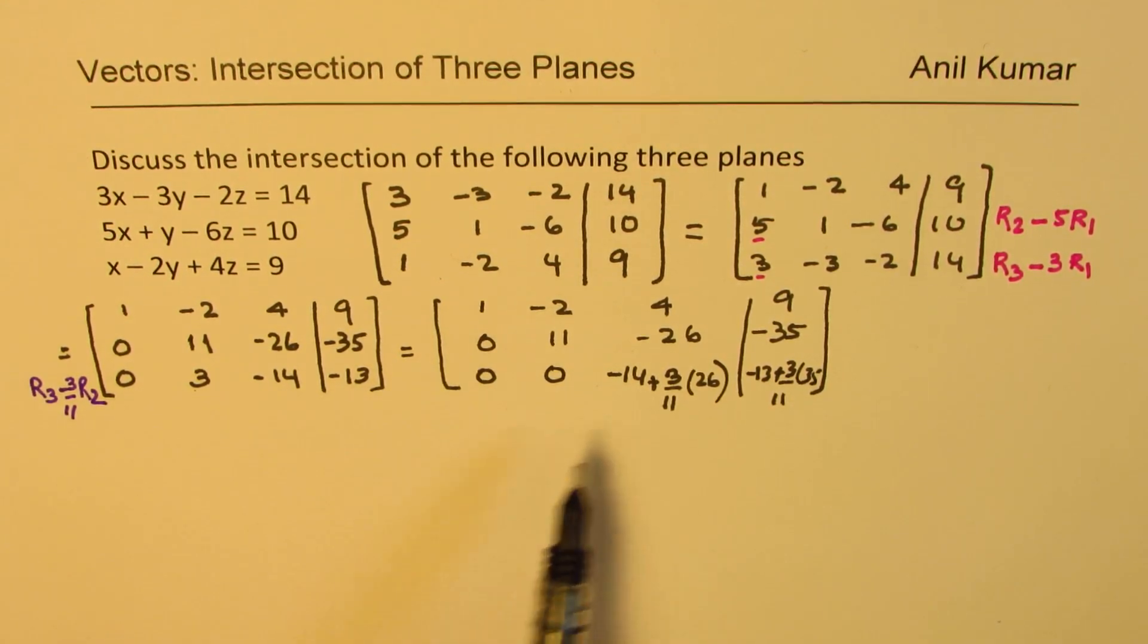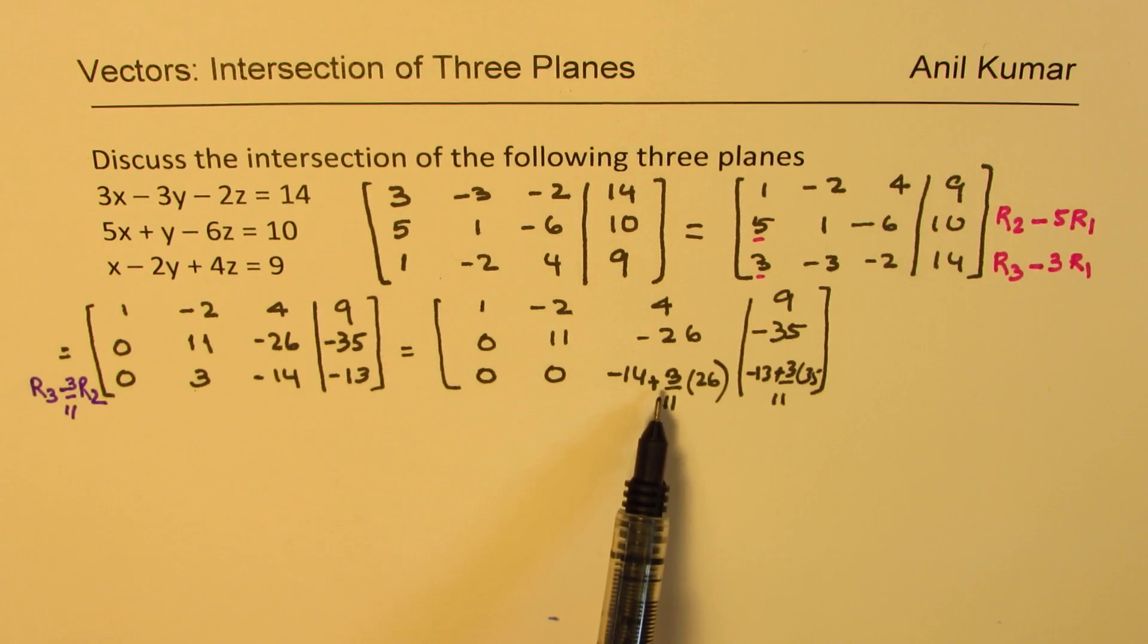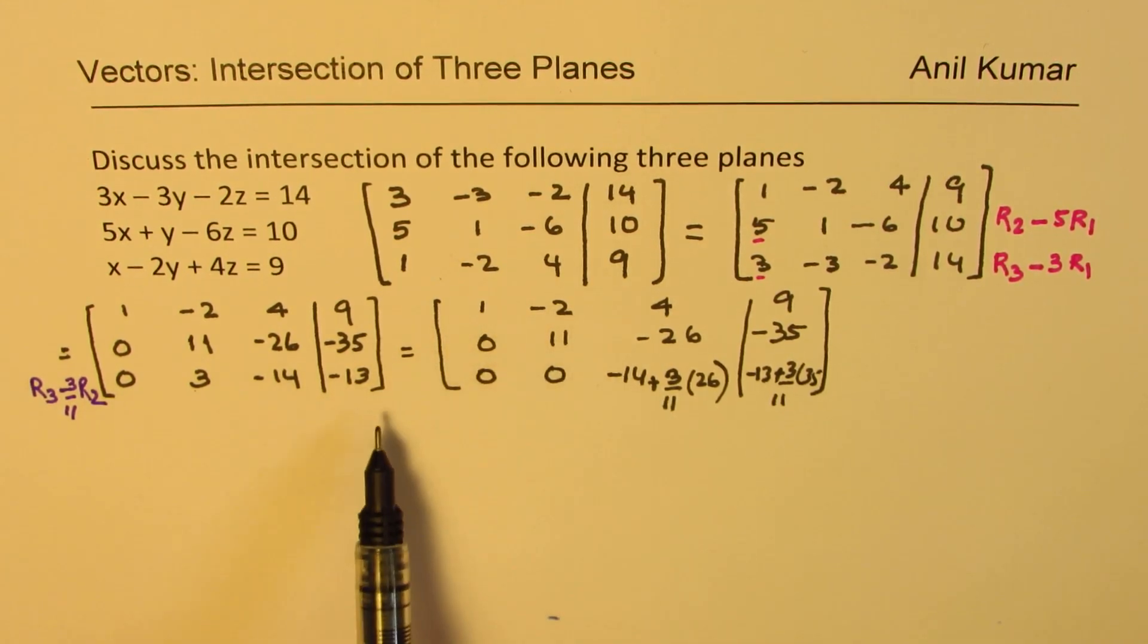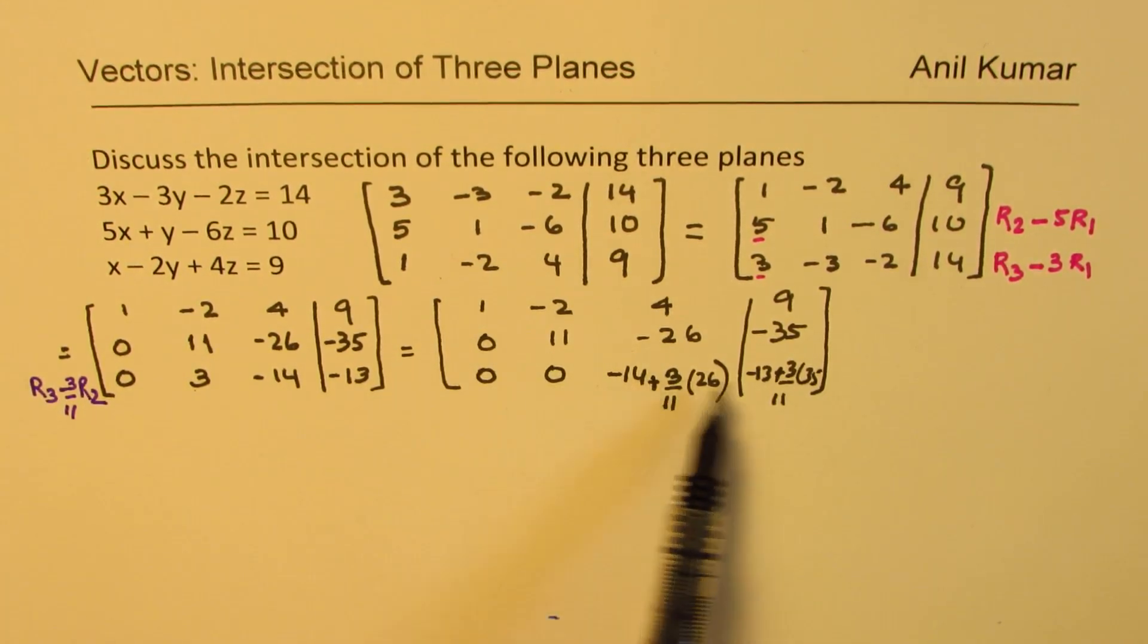So now, we have a form in which we can equate and find x, y, and z values. So you get 0, 0, and something here equals to that thing.